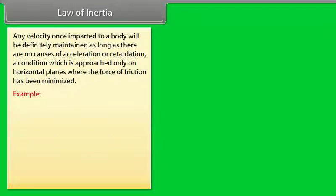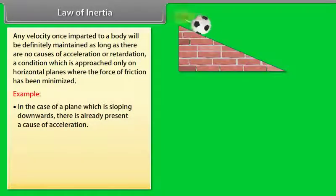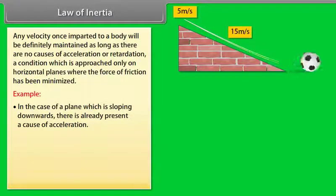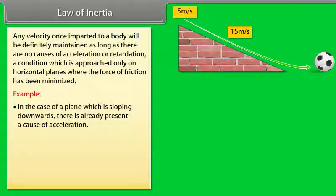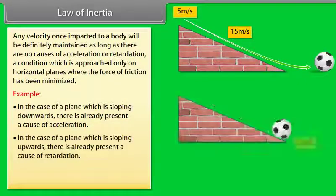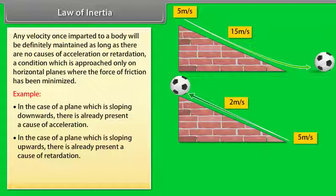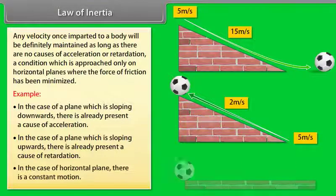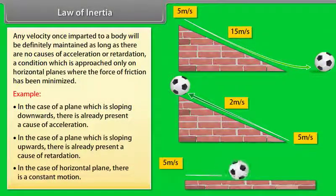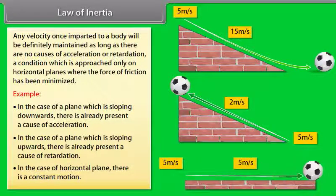Let us take an example. In the case of a plane which is sloping downwards, there is already present a cause of acceleration. In the case of a plane which is sloping upwards, there is already present a cause of retardation. In the case of a horizontal plane, there is constant motion.